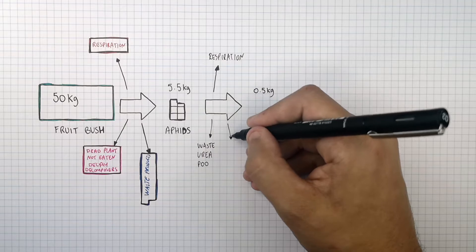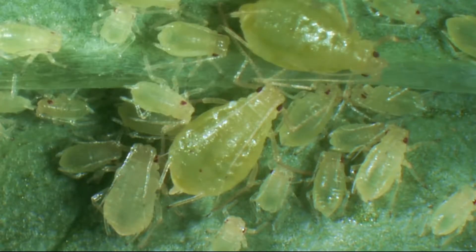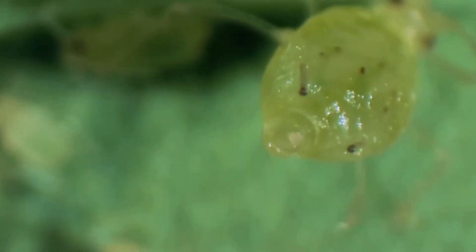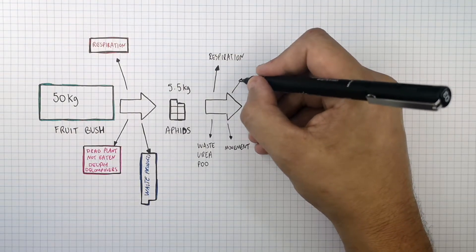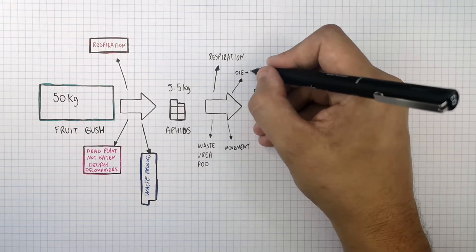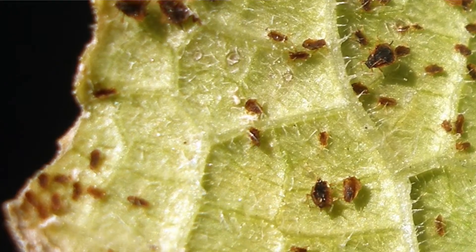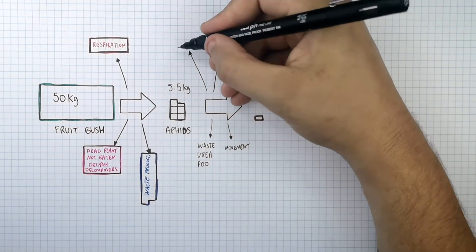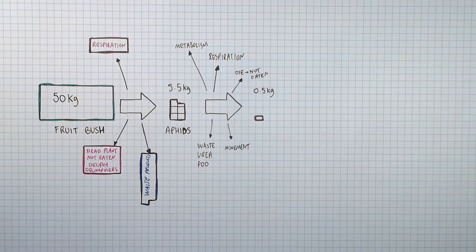When organisms move, they require energy to do so. The energy from the biomass is transferred to the kinetic stores of the animal for movement and also to the surroundings by heating. Not all the aphids are eaten by organisms in the next trophic level — some die without being eaten, so that energy is not transferred to the next trophic level. Energy is also used for metabolism within the aphids — building and breaking down molecules — and energy is required for the growth and repair of cells.